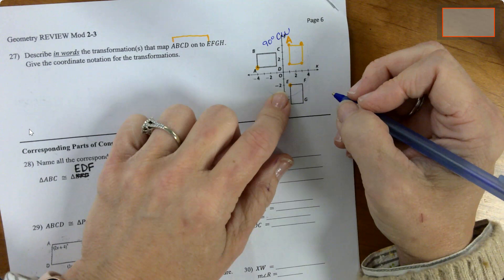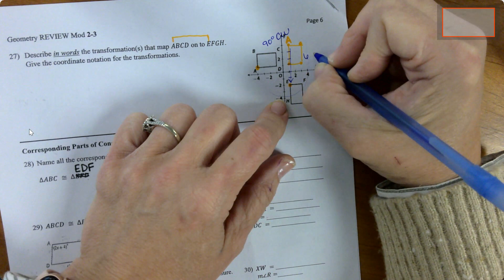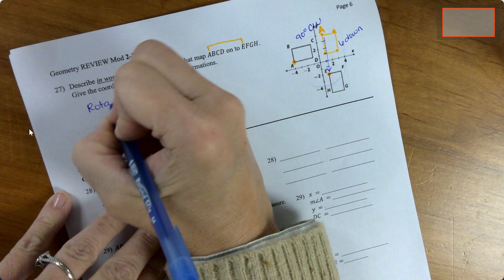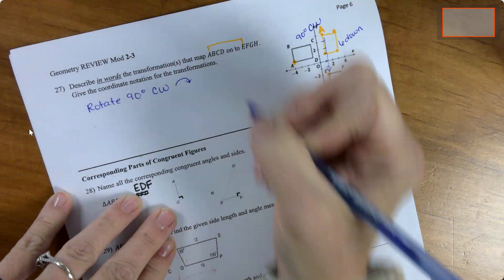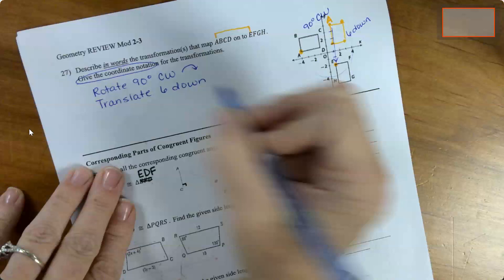So now I need a rule. Give the coordinate notation rule for that. So x, y is the original. And then a 90 degree clockwise, now it's the same thing as 270 counterclockwise. So that would be y opposite x. And then finally to move it down 6, same x, but y minus 6. So there is my coordinate notation rule for that translation or transformation.